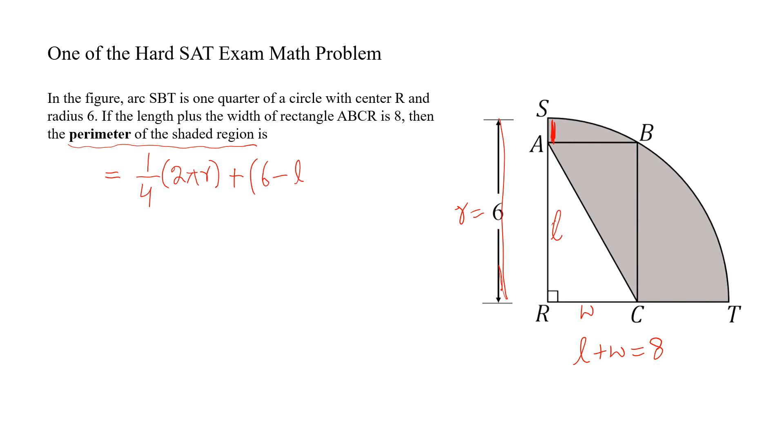6 minus length plus this region. This will be equal to 6 minus width plus this region AC. But AC is equal to RB. RB is 6, so AC is also equal to 6.